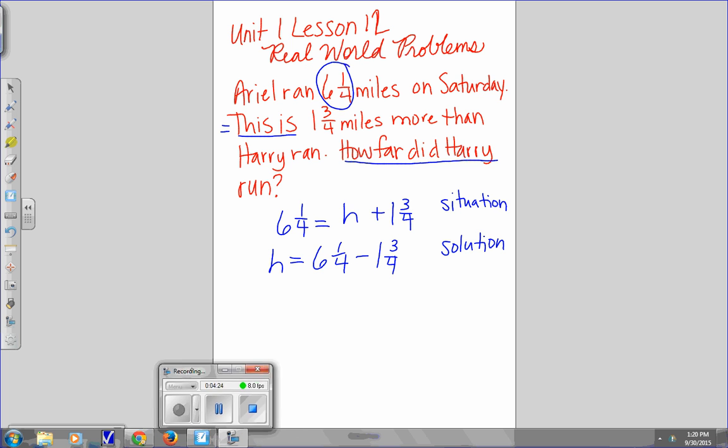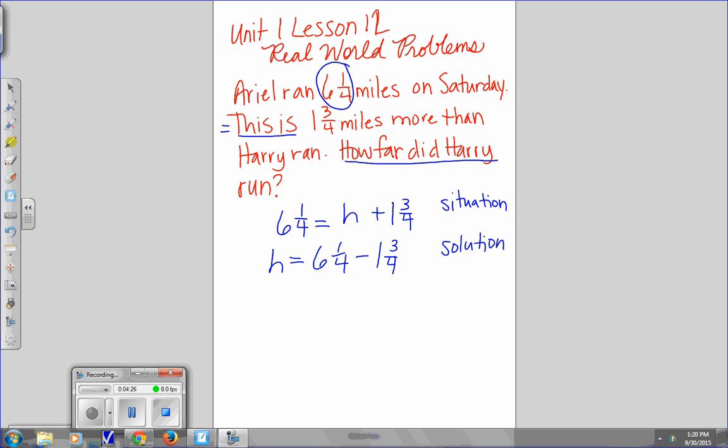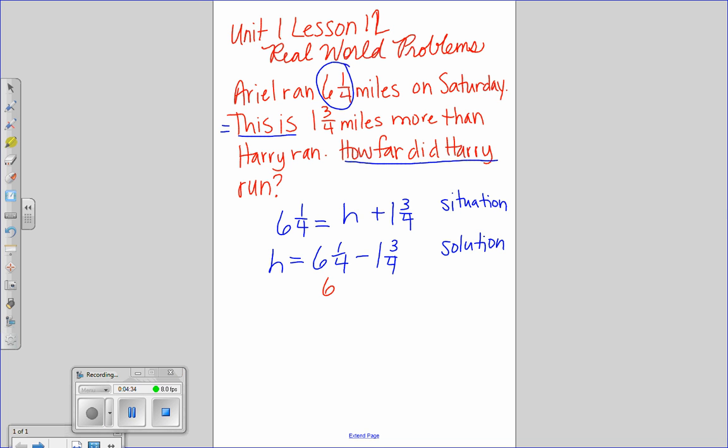Now, if I'm figuring it out, how would I round this first of all? Let's do an estimate. Give ourselves an estimate. Six and one quarter, we're going to keep at six. Take away one and three quarters, we'll make two. So, my estimate is going to be around four miles. Now, let's figure out what we're going to get.